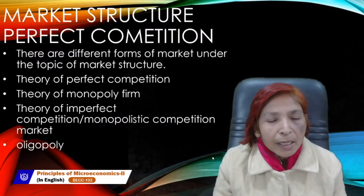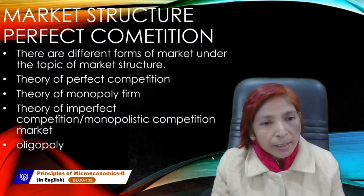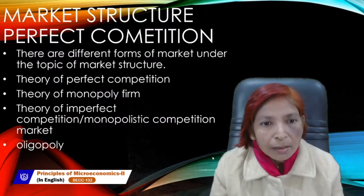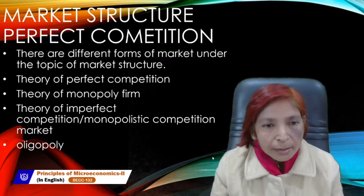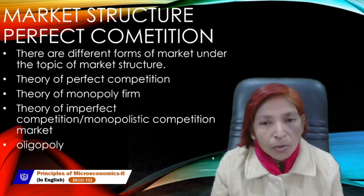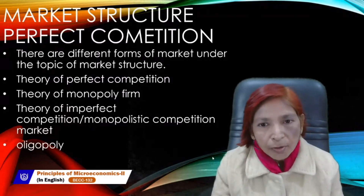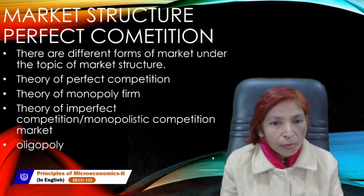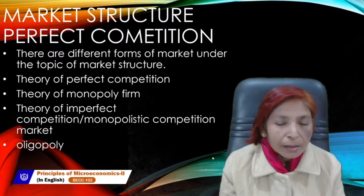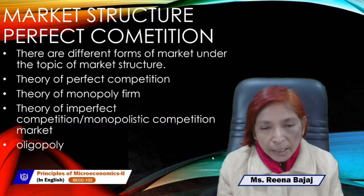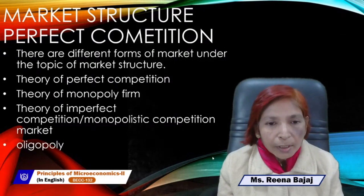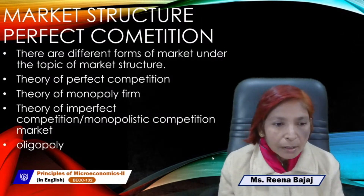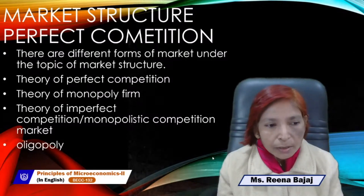Market structure has different forms of market. As you know, market is a place where buyers and sellers meet together to sell or purchase goods and services. There are four types of market: Theory of Perfect Competition, Theory of Monopoly Firm, Theory of Imperfect Competition (also known as Monopolistic Competition), and Oligopoly.